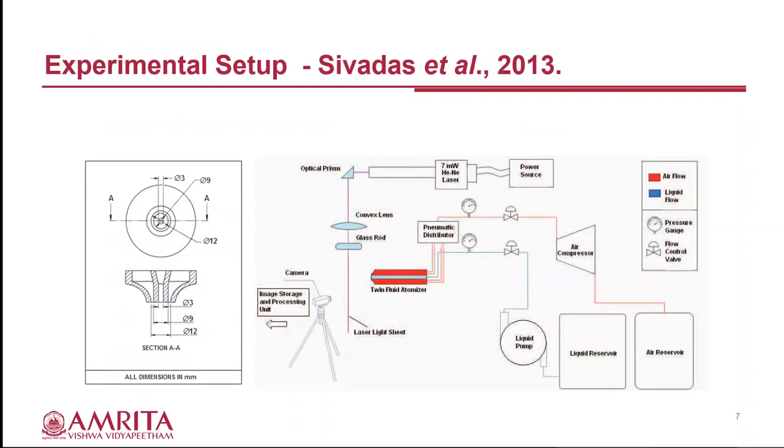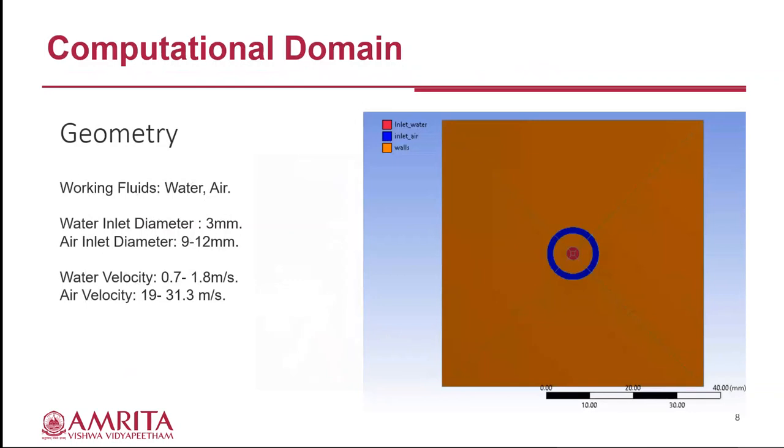Experimental setup. This diagram on the left displays geometric design of the coaxial twin fluid atomizer used by the author Sivadas et al. 2013 in their experimental study. The block diagram on the right describes the experimental setup. In our study the working fluid is water and air. This is the diagram of the geometry of twin fluid atomizer where red color area is water inlet with diameter 3mm, whereas the blue color area is air inlet and the annular area is from 9mm to 12mm diameter, and the yellow color represents the walls. In the present study we are varying the water and air velocities from 0.7 to 1.8 m/s and 19 to 31.3 m/s.